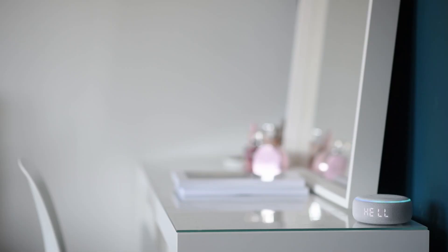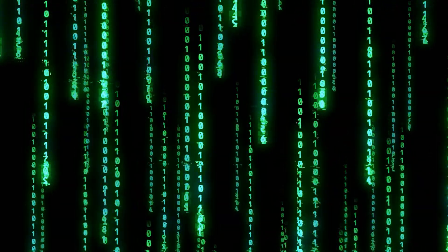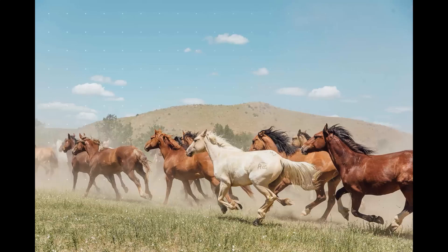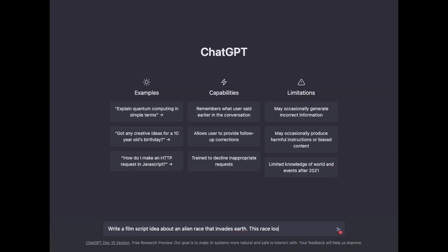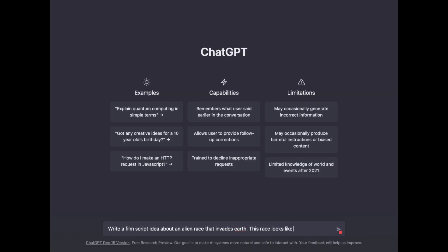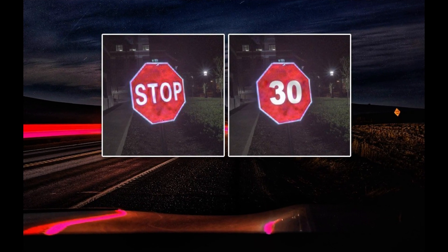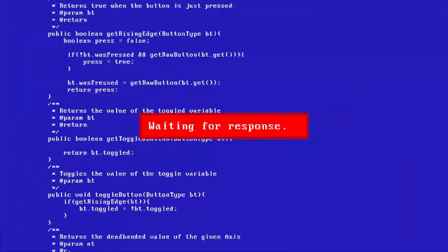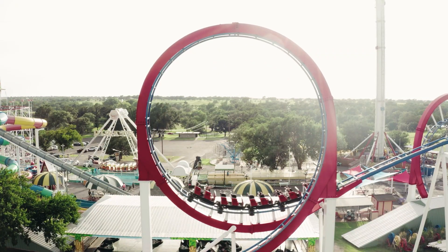Imagine your voice assistant suddenly starts rapping instead of telling you the weather. In this video we're hacking the matrix — literally. From text to images, videos, and even audio, no AI is safe. We've got chatbots tricked into generating false information, image recognition systems fooled by a simple sticker, and voice assistants manipulated to hear things that were never said. Let's dive in.